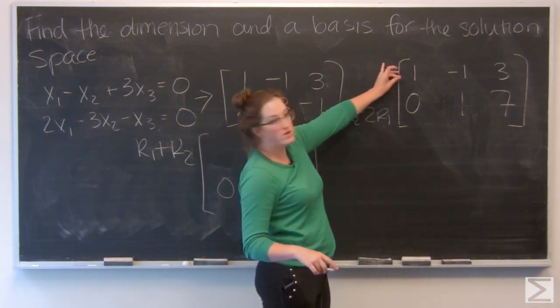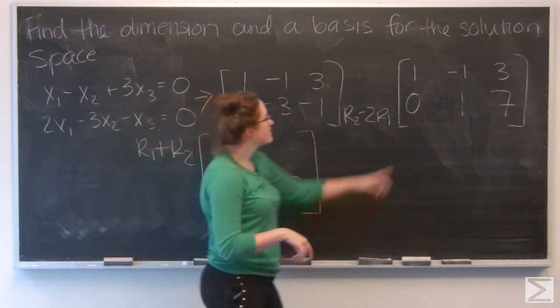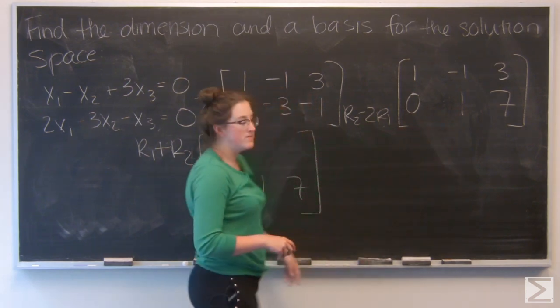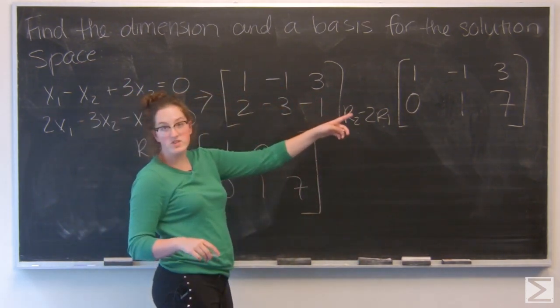One plus zero gives me one. Negative one plus one gives me zero. Three plus seven gives me ten.